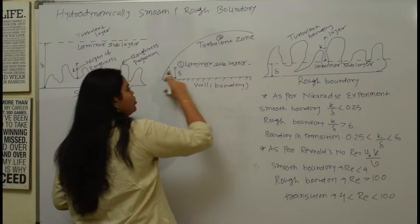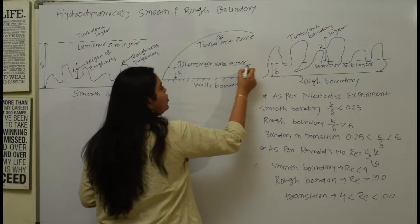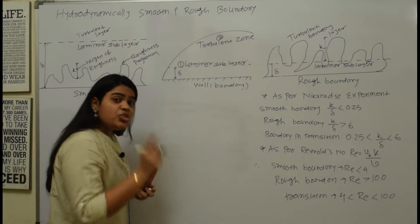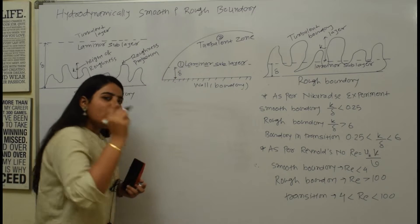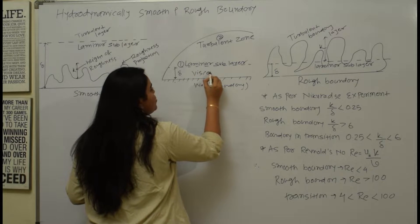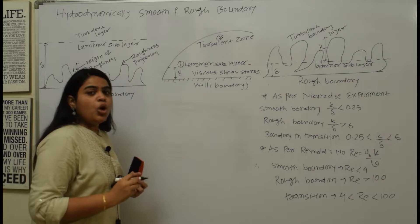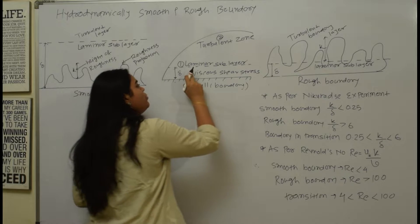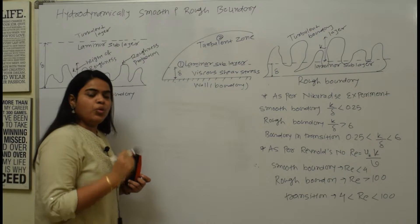When there is a turbulent flow along the boundary, a thin layer of fluid is produced in the immediate vicinity of the boundary. In this thin layer, viscous shear stress is the dominant force, and the shear stress due to turbulence is negligible. We call this the laminar sub-layer. In the laminar sub-layer, viscous shear stress is the main force.